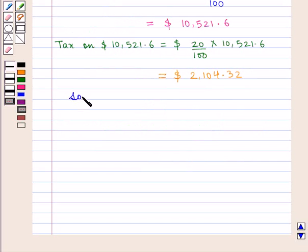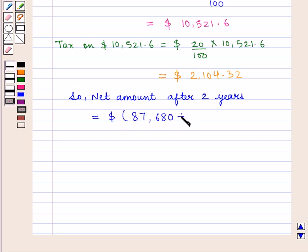So, the net amount after two years will be $87,680 plus $10,521.6 minus $2,104.32, which equals $96,097.28.